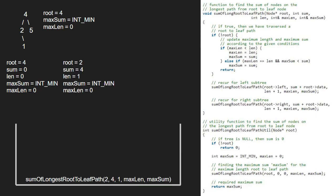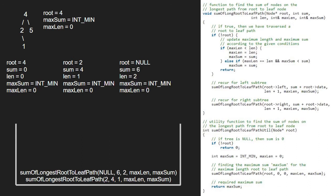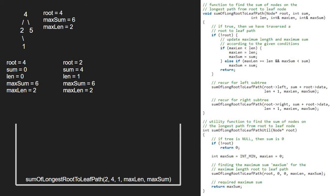Again, as root is not null, we pass the left child of 2, which is null. Now as root points to null, the if condition gets satisfied and we check if max_len is less than len. As it is true, we set max_len to len and max_sum to sum. After that, we return to the previous call.